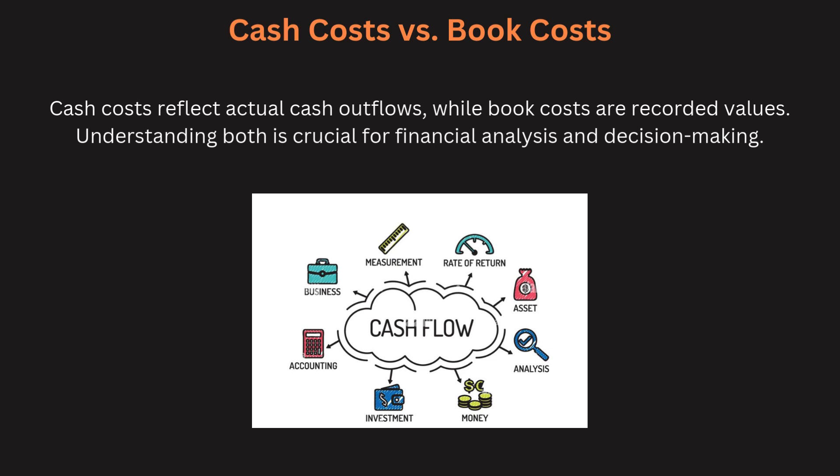Now, cash cost versus book cost. Cash costs are the actual cash outflows associated with a project, while book costs are accounting values recorded on financial statements. For instance, cash costs reflect real expenses like payroll, while book costs may include depreciation. Engineers must understand both types of cost when assessing project feasibility.